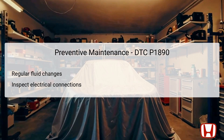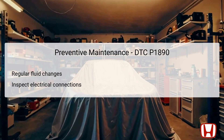General best practices for maintaining the CVT speed control system are essential for preventing the recurrence of issues like DTC P1890. Regular fluid changes contribute significantly to the longevity and efficiency of the transmission, reducing the risk of slippage or overheating. It's also advisable to inspect electrical connections and components routinely, ensuring that all sensors and wiring related to speed control are secure, free from corrosion, and in good working order. By catching issues early before they escalate, vehicle owners can avoid costly repairs and ensure a more reliable driving experience. Following manufacturer guidelines for maintenance can enhance the vehicle's overall performance and preserve the integrity of the CVT system.